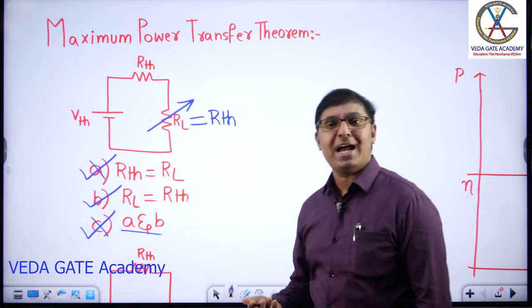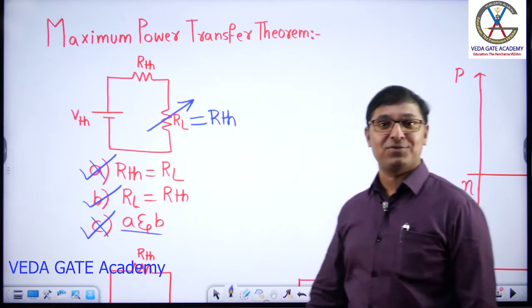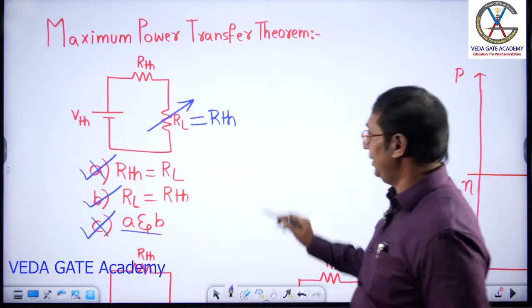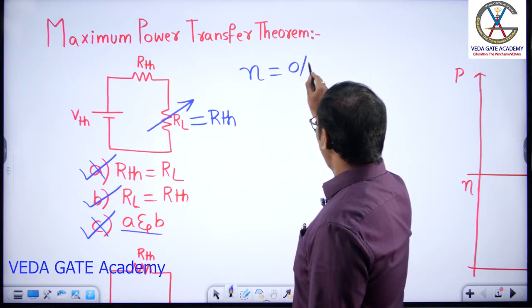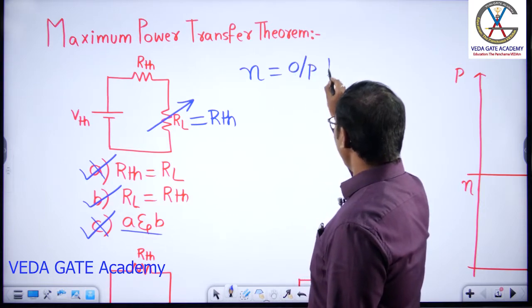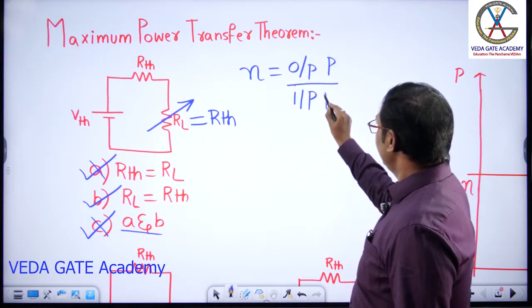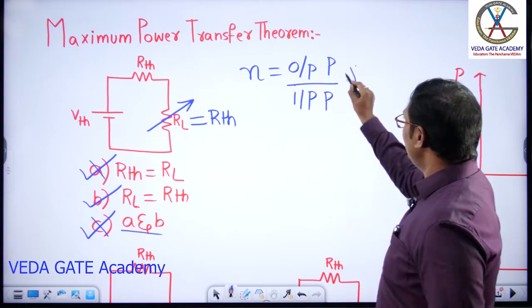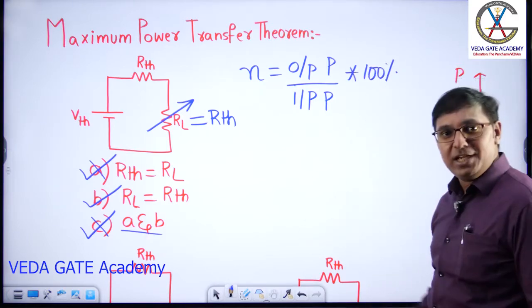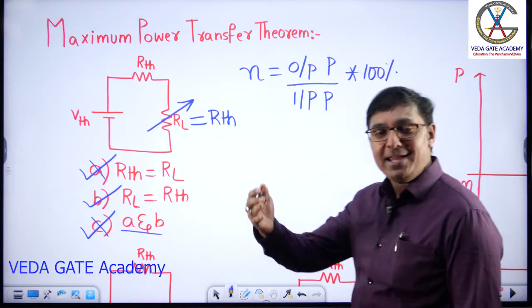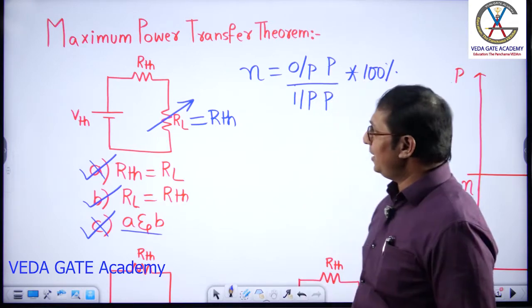Next question asked by the interviewer: what is the efficiency of the maximum power transfer theorem? The efficiency formula is output power divided by input power, multiplied by 100 percent.